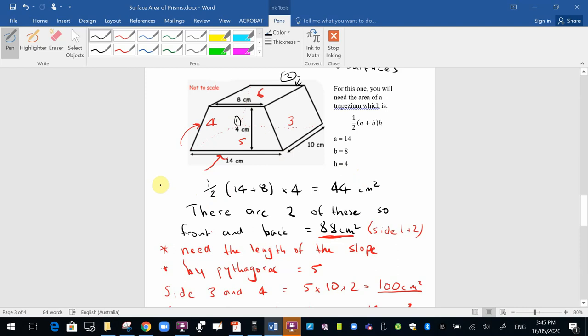So for surface 1 and 2, half times 14 plus 8, which is 22, times 4, which is the height. 14 plus 8 equals 22, times 4 equals 88. Half of that is 44. So that's the front surface. And because there's two of them, the total is 88 centimeters squared.